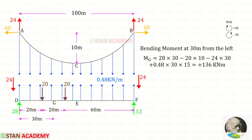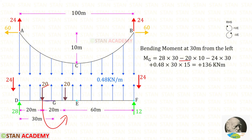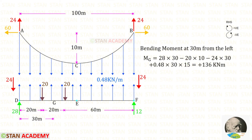Now let us find the bending moment at point G. We have to use the right hand side rule: clockwise will be positive and anticlockwise will be negative. The reaction VED is acting in the clockwise direction so it is positive and the distance is 30, giving 28 × 30. This reaction is acting in the anticlockwise direction so it is negative and the distance is 30. The load distance from G is 30 minus 20, which is 10. The uniformly distributed load is acting in the clockwise direction so it is positive and the distance is 30; with the UDL we multiply by 30 by 2, giving 15. Finally for the bending moment at point G we will get 136 kNm.